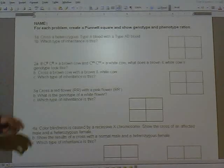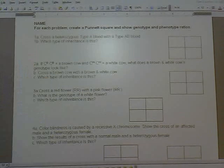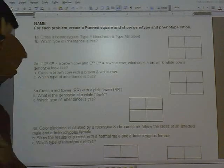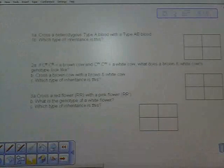Okay, this video is going to walk you through the Punnett square problems that represent non-Mendelian inheritance. So your worksheet looks like this. Our first problem says cross the heterozygous type A blood with a type AB blood.